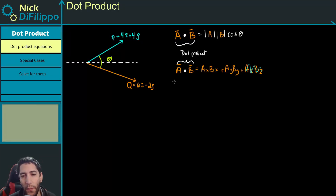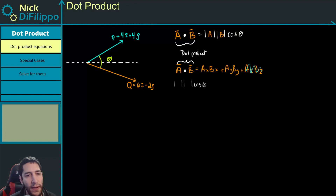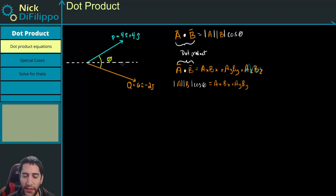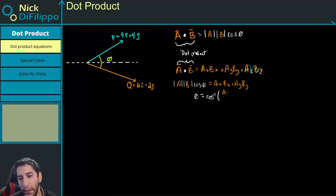If we put these two equations together, what we have is the magnitude of A times the magnitude of B times the cosine of theta is going to be equal to Ax·Bx plus Ay·By, leaving out the z direction. And when we solve for theta, we get theta is equal to the inverse cosine of (Ax·Bx + Ay·By) over the magnitude of A times the magnitude of B.